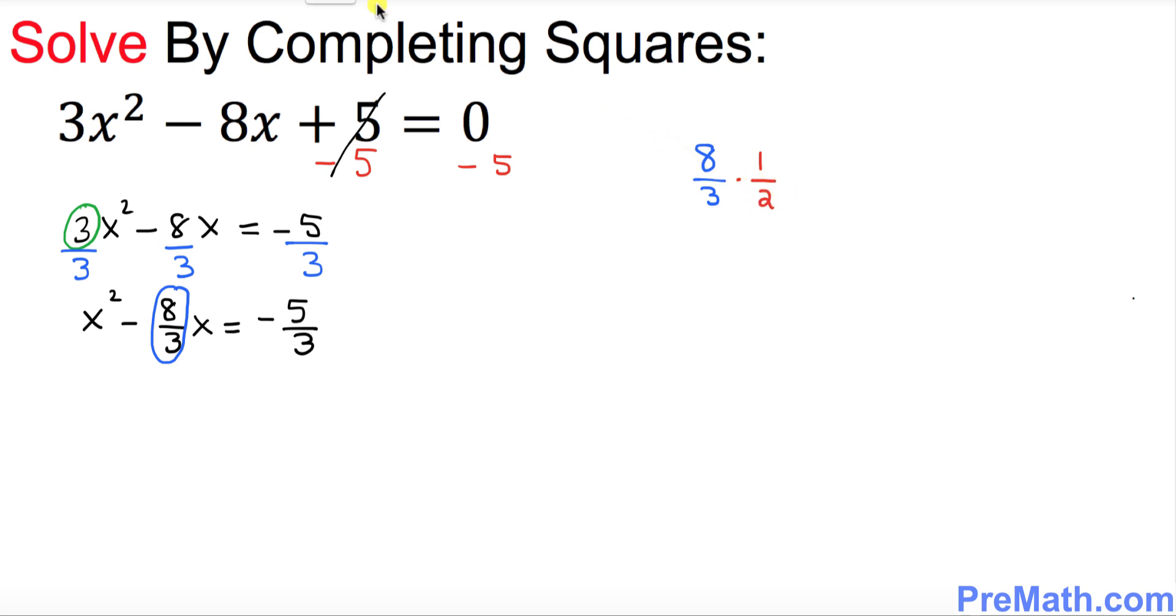Let's go ahead and multiply. 8 times 1 is 8 divided by 3 times 2 is 6. And if you reduce it that becomes 4 over 3. And now whatever you got, I want you to square this one.